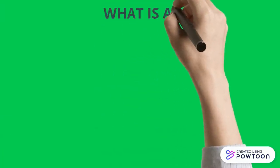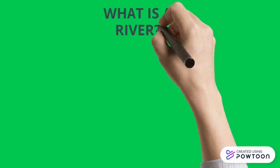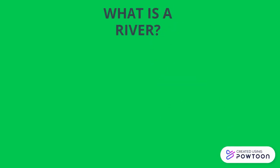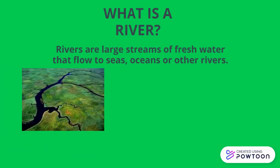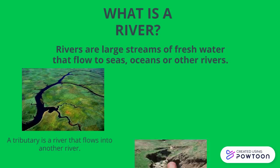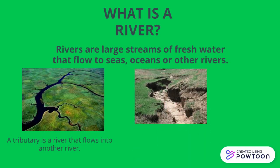What is a river? Rivers are large streams of fresh water that flow to seas, oceans, or other rivers. A tributary is a river that flows into another river, and the gully is a channel that only has water when it rains.